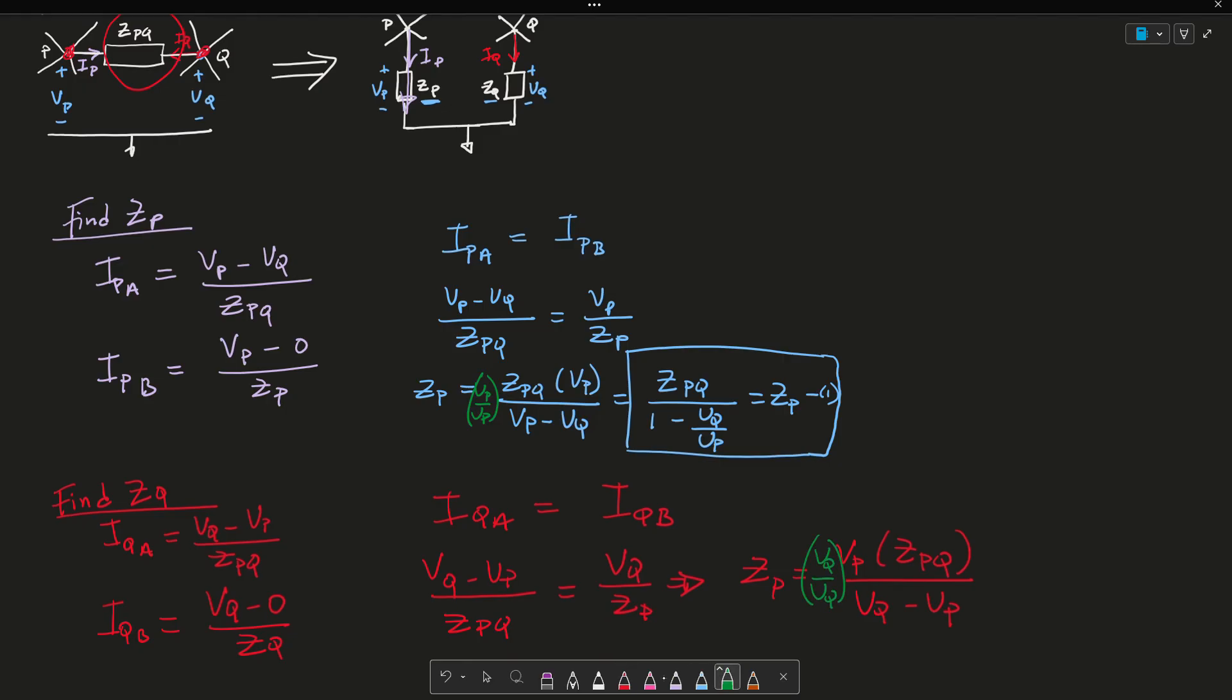And since we want these two equations to equate to each other, this is going to be IQA must equal IQB. And so this becomes VQ minus VP over ZPQ equals VQ over ZQ. If we solve for ZQ, this is simply VQ times ZPQ over VQ minus VP.